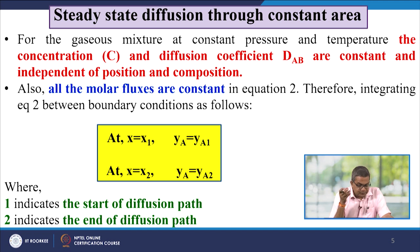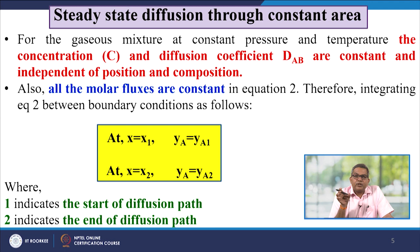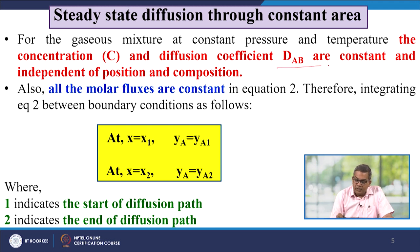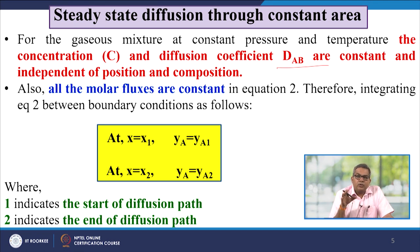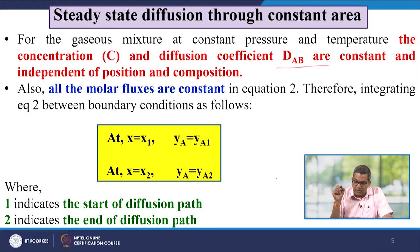For a gaseous mixture at constant pressure and temperature, the concentration C and the diffusion coefficient DAB are constant and independent of position and composition. So all the molar fluxes are constant in this particular equation.